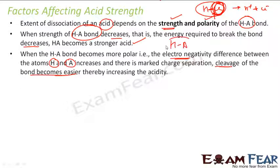If it is easy to break the bond, it will be easily converted into H+ and A-. If it is difficult to break the bond, it will be difficult to form H+ and A-. So bond breakage depends on the strength of the bond and the polarity of the bond.